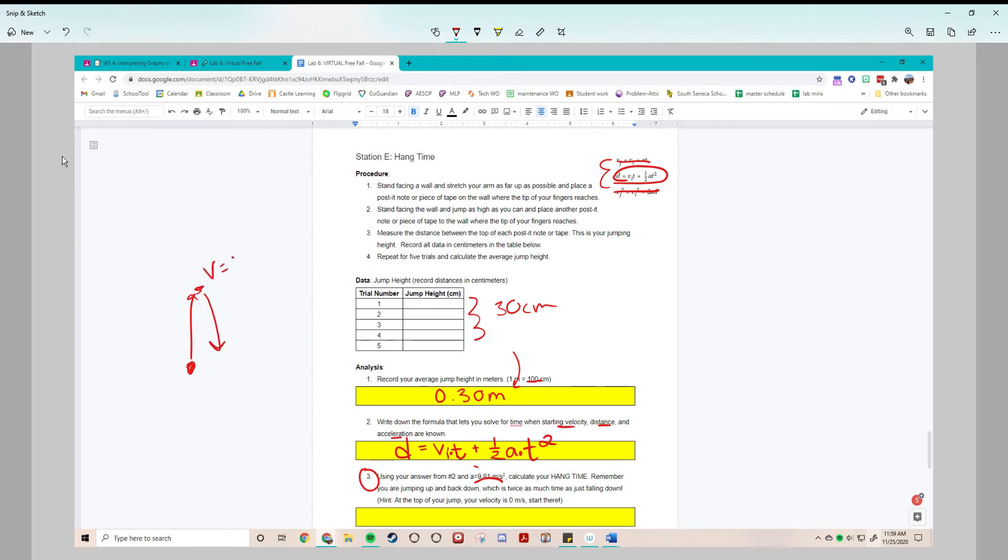At the top your velocity is zero. At the bottom when you jump you have an initial velocity, and when you land you have a final velocity. In fact those are probably going to be the same number, one of them will just be negative, which is a neat thing about projectile motion, but you don't need to know that right now.